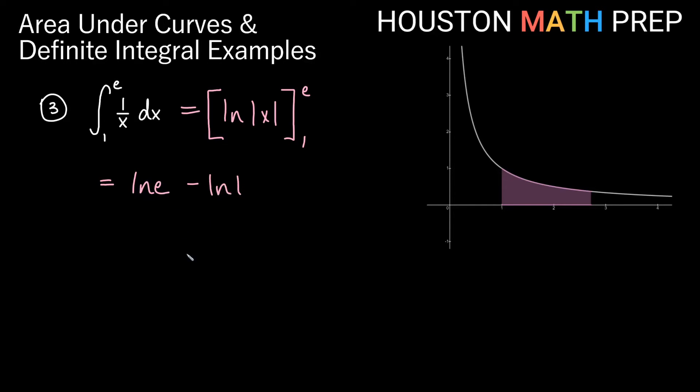Now these are actually numbers that we should know. What is ln of e? ln of e is actually 1. And what is natural log of 1? What is log of any base of 1? It's 0. So we get 1 minus 0, and this is actually 1. This tells us a neat thing about the graph of 1 over x. This tells us that the area between 1 and e, this is actually exactly 1 unit.